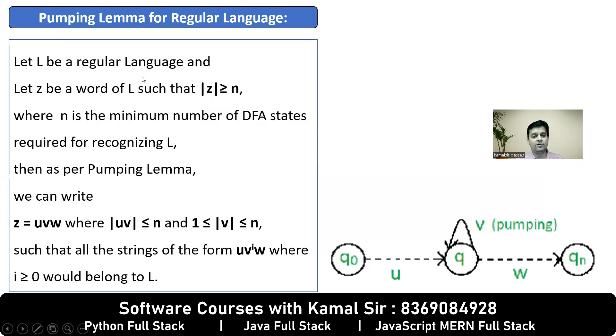Let L be a regular language and let Z be a word of L, whose length is minimum number of DFA states for recognizing L. So pumping lemma says that the Z you select can be written in the form of u, v, w.